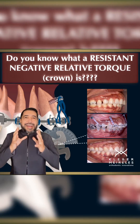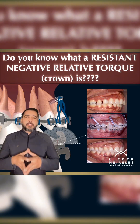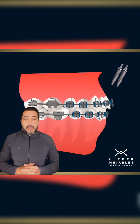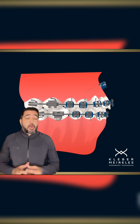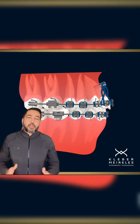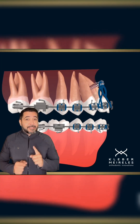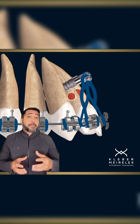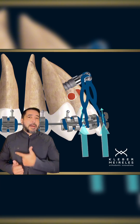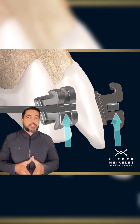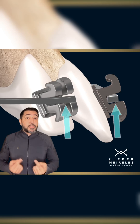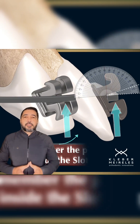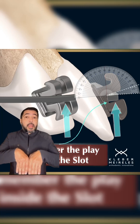Do you know what a resistant negative relative torque is? Sometimes you need to do that — for example, when doing the intrusion of upper anterior teeth for closing an anterior open bite. To close an anterior open bite by intrusion of upper teeth, both anterior and posterior segments, sometimes you need to do intrusion of anterior teeth using that.